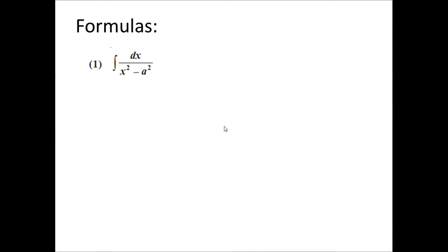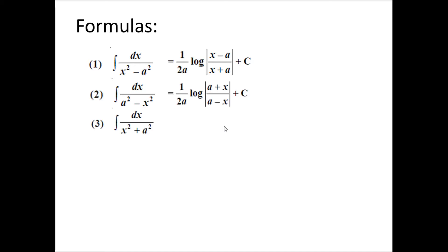Before I take up all these four kinds of problems, let us recap all four formulas which I discussed in my previous video. The first formula is: integral of 1 upon x squared minus a squared dx equals 1 upon 2a times log of (x minus a) upon (x plus a) plus a constant. The second one is: integral of 1 upon a squared minus x squared dx equals 1 upon 2a times log of (x plus a) upon (a minus x) plus a constant. The third one is: integral of 1 upon x squared plus a squared equals 1 upon a times tan inverse of x upon a plus a constant.